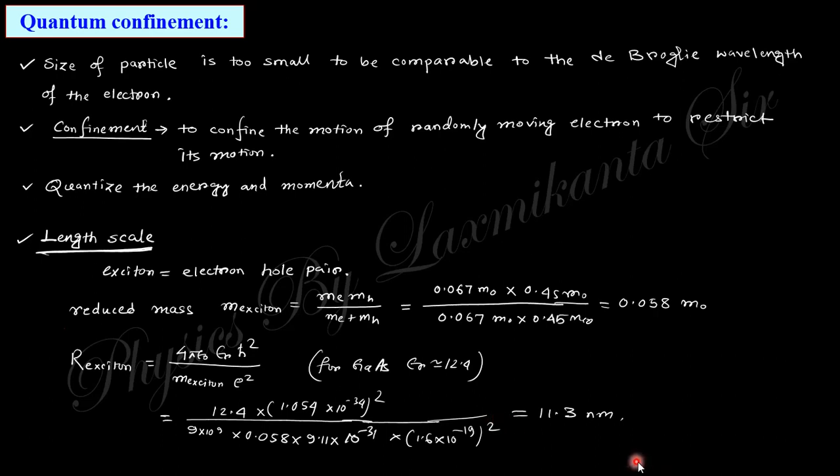Quantum confinement means that a particle is confined in a direction. If confined in all three directions it is fully quantum confined. The length scale of confinement is of the order of the exciton — the electron-hole pair — Bohr radius. For weak confinement, r is much greater than the exciton radius; for moderate confinement, r is comparable; and for strong confinement, r is much smaller than the exciton radius.